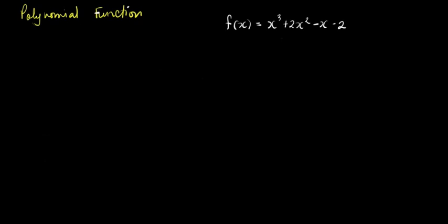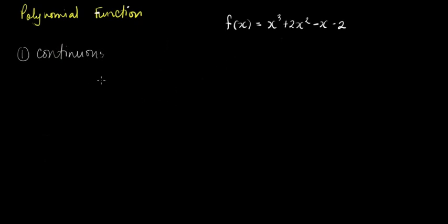The first one is that the graph of a polynomial function is continuous. Ibig sabihin, walang putol yung kanyang graph. So when you sketch the graph of a polynomial function, there are no gaps. It's very smooth. Walang gap.